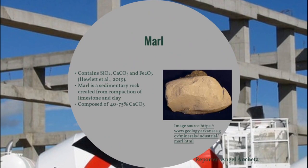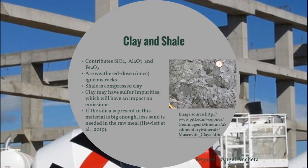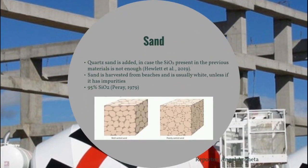Marl contains silicon oxide, calcium carbonate, and ferrous oxide. It is a sedimentary rock created from the compaction of limestone and clay and is composed of 40 to 75 percent calcium carbonate. Clay and shale contribute silicon oxide, aluminum oxide, and ferrous oxide. Clay is a weathered igneous rock while shale is compressed clay. Clay may have sulfur impurities which impact emissions. If the silica present is large enough, less sand is needed. If silicon oxide is insufficient from other raw materials, producers add quartz sand, which is at least 95 percent silicon oxide.